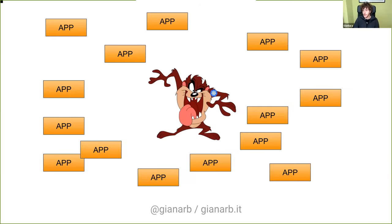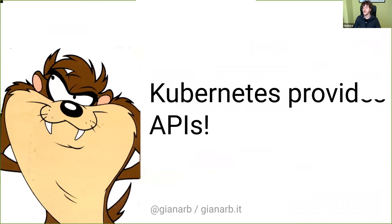Kubernetes has APIs that can be used to discover applications and get their IPs. If you have the IP and you know the port, you can get the profile without doing anything crazy. You can just go and scrape them periodically. The summary is: just use the Kubernetes API to create a bridge that will collect profiles and push them to Profefe storage.